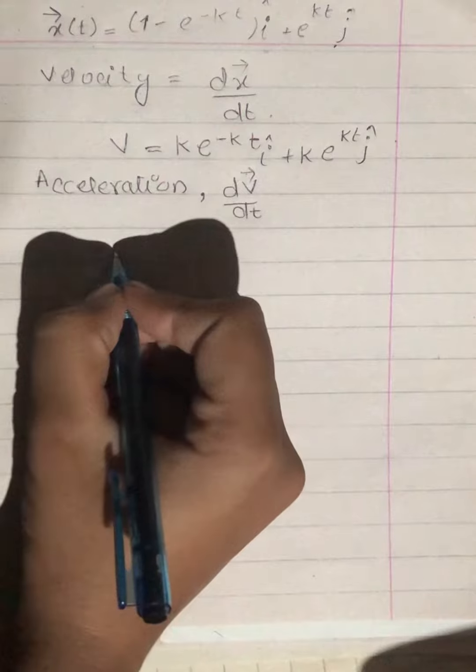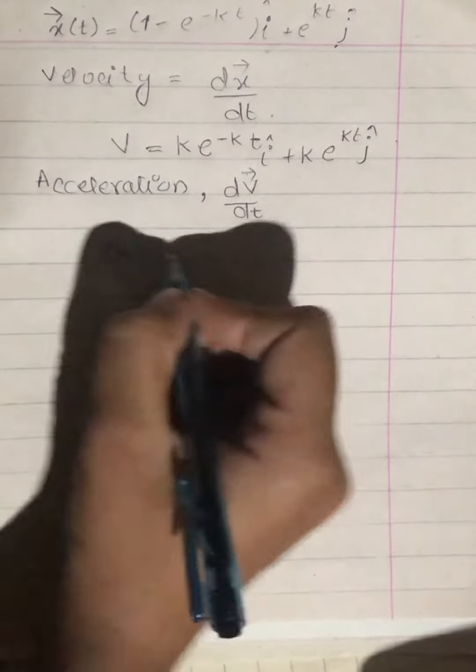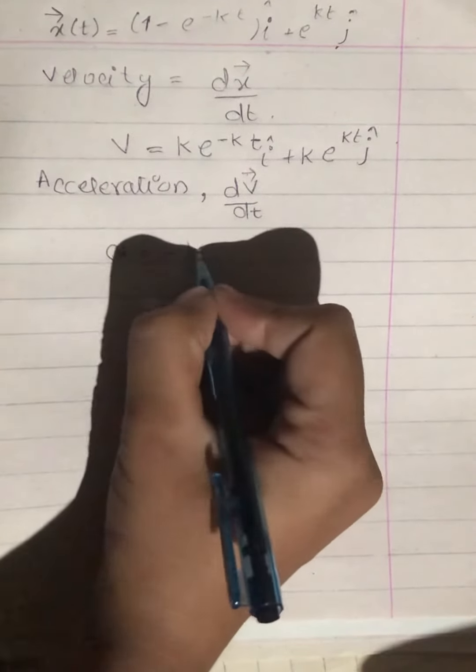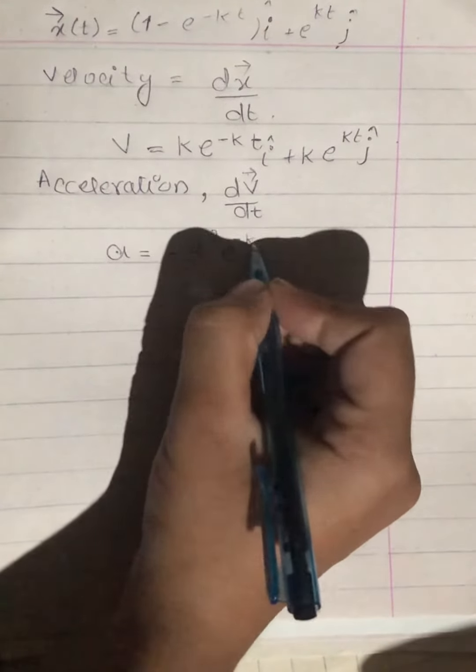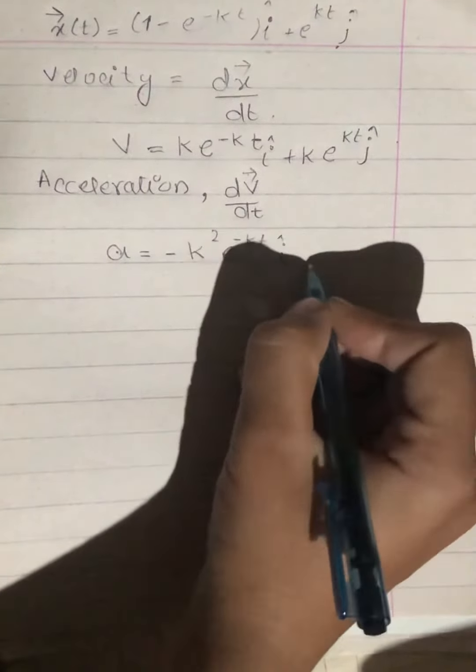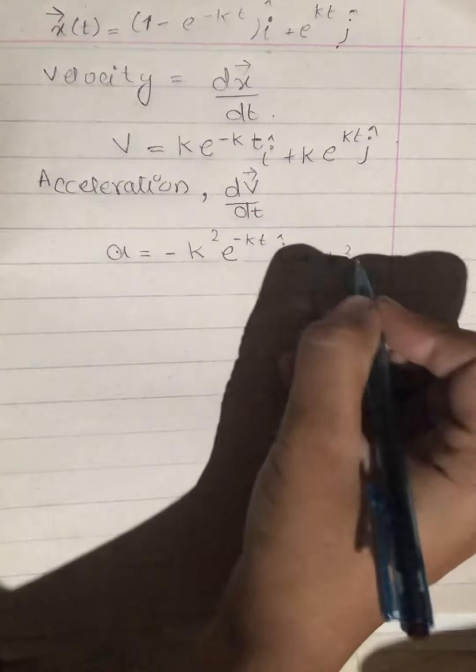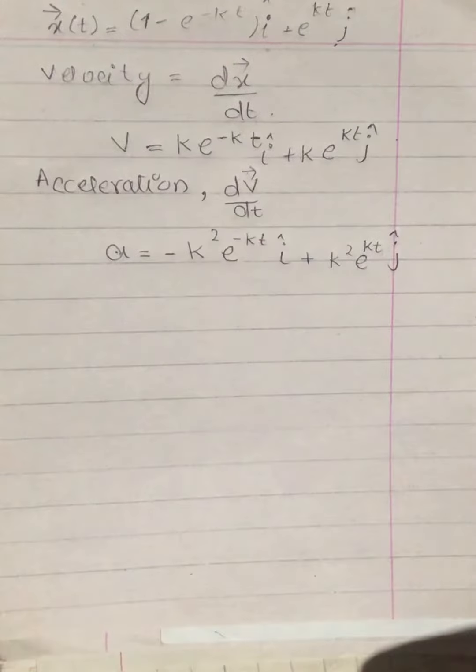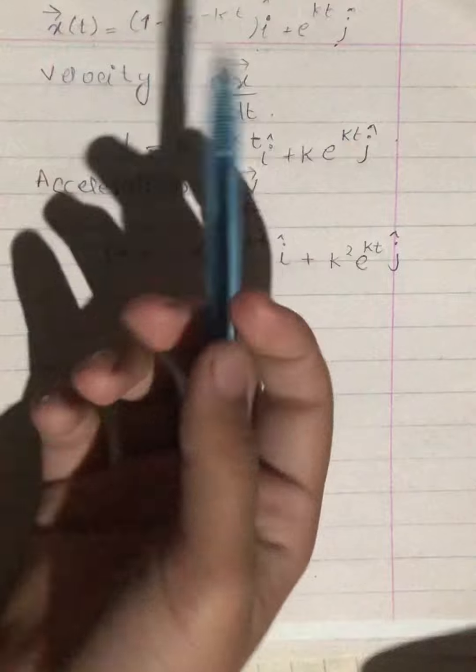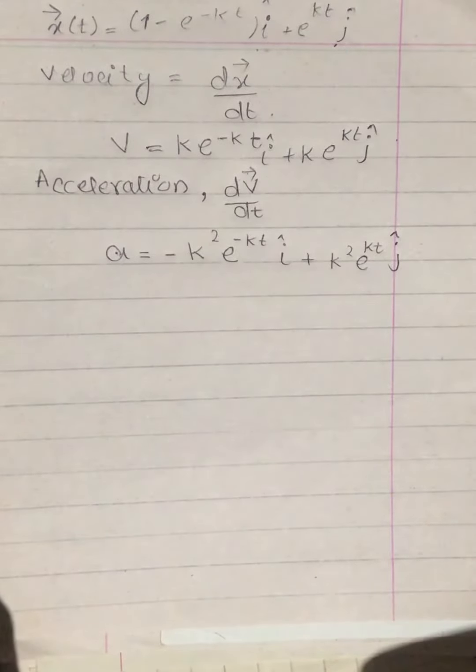So when we find acceleration, we have negative k²*e^(-kt) i-cap plus k²*e^(kt) j-cap. This is the acceleration and velocity of the given position vector as a function of time.